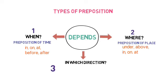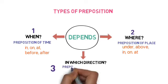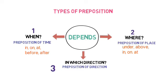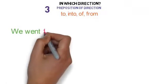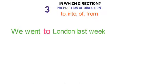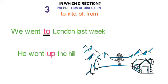Number three is the preposition that shows direction — called preposition of direction. Examples are: to, into, of, from, up. For example, 'We went to London last week' — 'to' is showing the direction. Another example: 'He went up the hill' — 'up' is an example of preposition of direction.